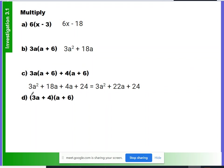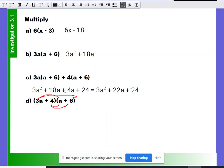So now we have a binomial, 3a plus 4, times the binomial a plus 6. So what that means is we are going to be multiplying 3a times everything in the other binomial. We're also going to be multiplying 4, times everything in the other binomial as well. So what do we get when we get 3a times a? 3a squared. 3a squared. What about 3a times 6?